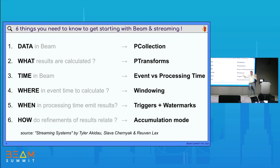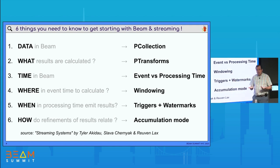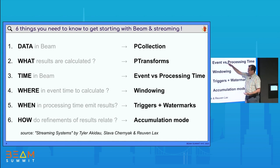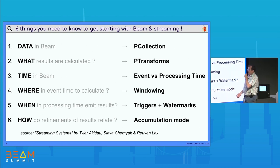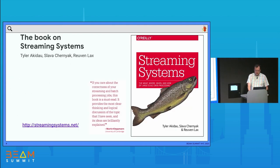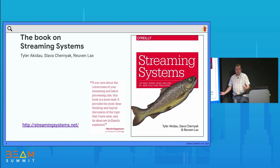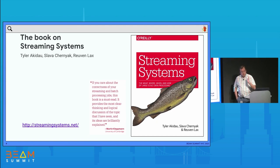The data is stored in a PCollection — you probably already know that. Everything above in the stack is the same as in batch. In streaming, you need to do additional stuff: you need to distinguish between event and processing time, you need timestamps in the data, you need to make a decision about windowing, triggering, watermarks, and accumulation mode. This is taken from a book I strongly recommend — it's 300 pages but very interesting, and it insists a lot on the concepts of streaming.